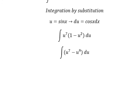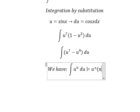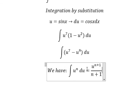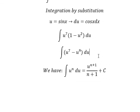Now we apply the integration formula. The integral of u^n du equals u^(n+1) over (n+1) plus C. We can apply this formula to both terms.